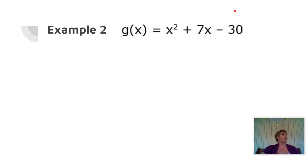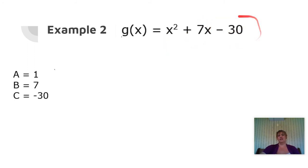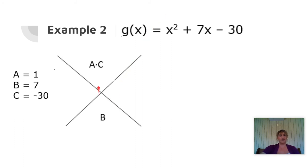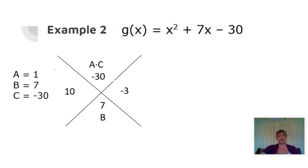Looking at our next example: g of x equals x squared plus 7x minus 30. We're going to factor that. A equals 1, b equals positive 7, c equals negative 30. We do our x puzzle: a times c goes on top, so 1 times negative 30 is negative 30, and b goes in the bottom, so that's 7. Now I'm looking for factors of negative 30 that add together to be 7. If I take positive 10 times negative 3, I get negative 30, and positive 10 plus negative 3 gives me positive 7. So my two sides are positive 10 and negative 3.